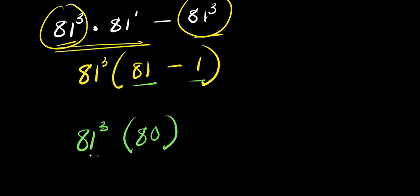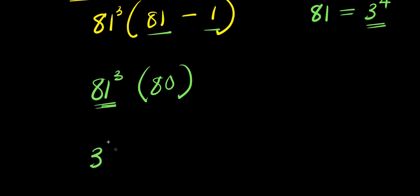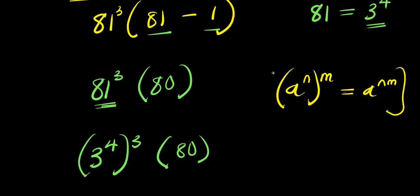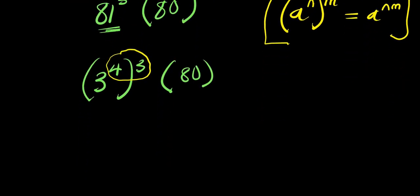Now I need to find the value of 81 to the power of 3 times 80. Remember, 81 is the same as 3 to the power of 4. So I'm going to replace 81 with 3 to the power of 4, raised to the power of 3, times 80. Using the rule that (aⁿ)ᵐ = aⁿˣᵐ, I multiply the exponents: 4 times 3 equals 12. So I have 3 to the power of 12 times 80.